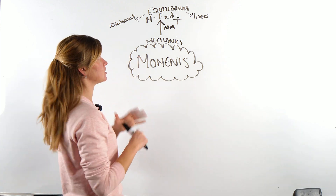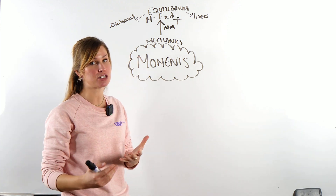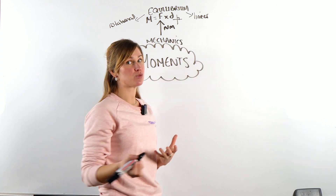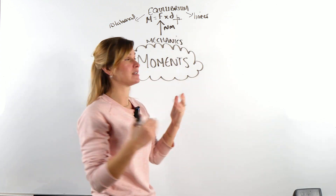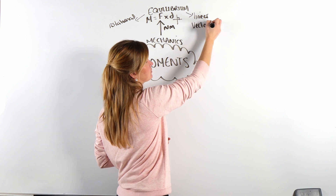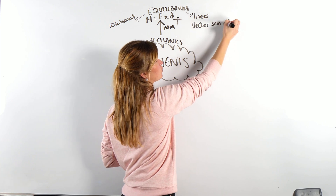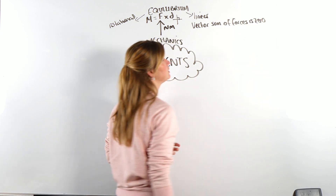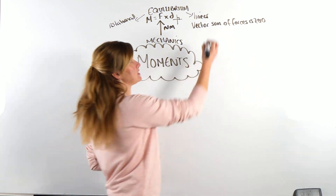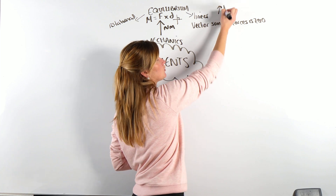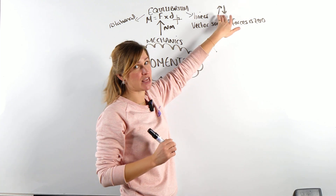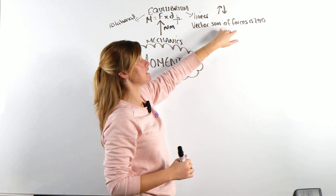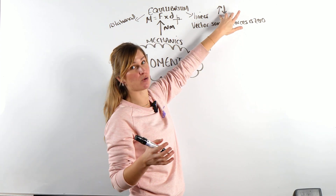You can't just state in your exam that the two things are linear and rotational equilibrium — you have to explain what they actually are. Linear equilibrium: the quickest sentence is just that the vector sum of the forces is zero. What it really means is all the upward forces equal all the downward forces. However, on the AQA paper you need to say the vector sum of the forces is zero.